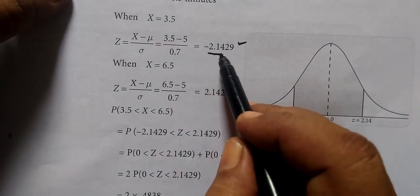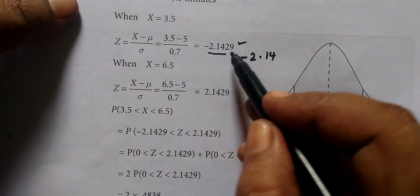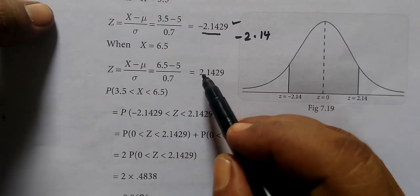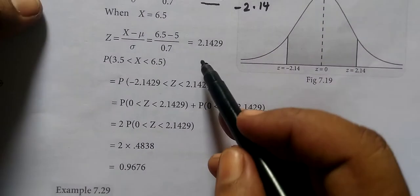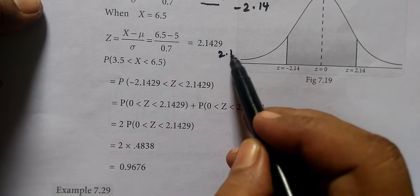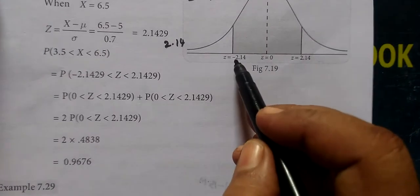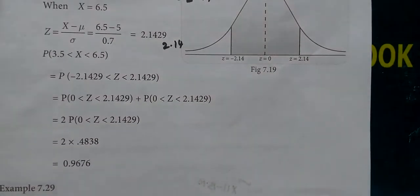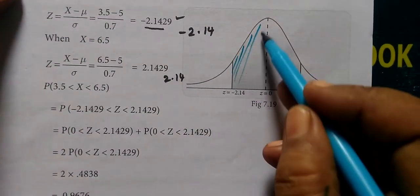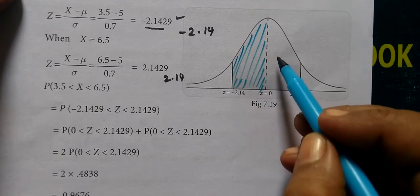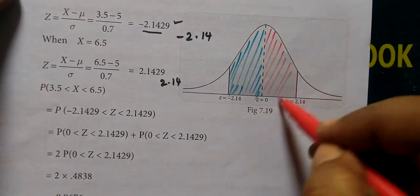When X = 3.5, Z = (X - μ) / σ = (3.5 - 5) / 0.7 = -2.1429, so -2.14. When X = 6.5, Z = (X - μ) / σ = (6.5 - 5) / 0.7 = 2.1429, so 2.14. This gives us the limits on both sides.